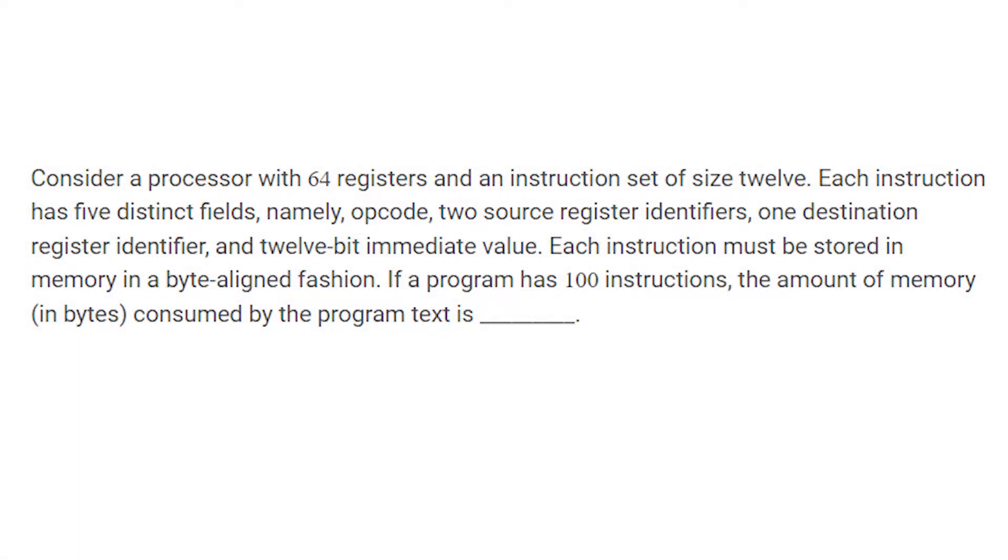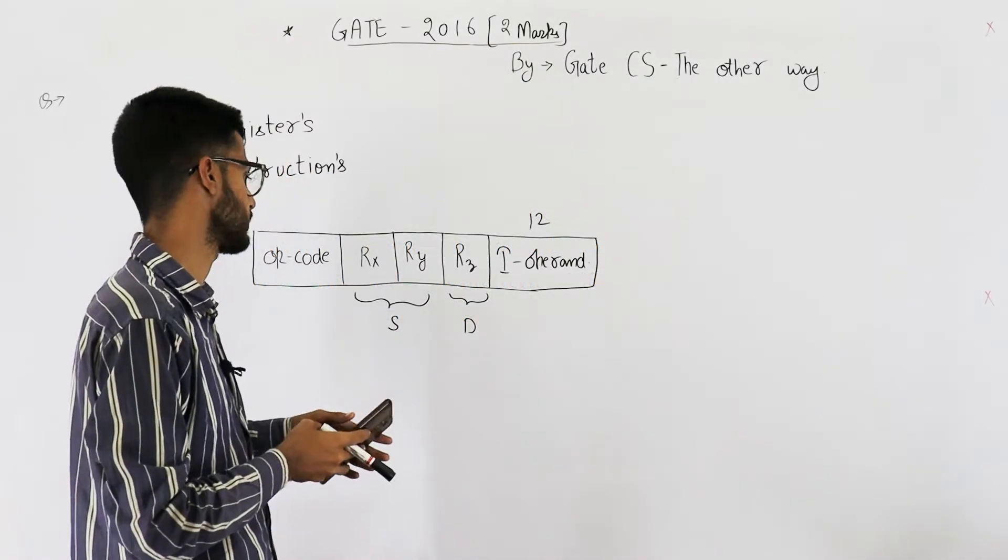Consider a processor with 64 registers and an instruction set of size 12. Each instruction has 5 distinct fields, namely opcode, 2 source register identifiers, 1 destination register identifier, and 12-bit immediate value. Each instruction must be stored in memory in a byte-aligned fashion. If program has 100 instructions, the amount of memory in bytes consumed by the text is.